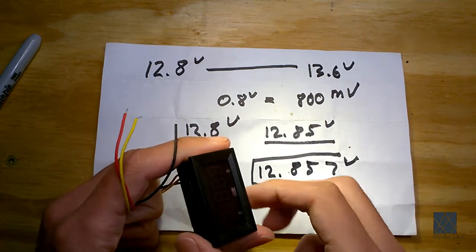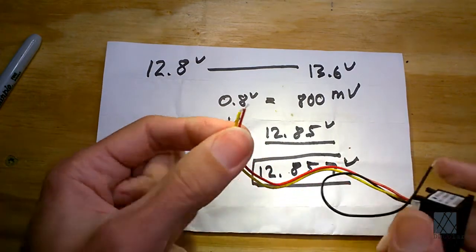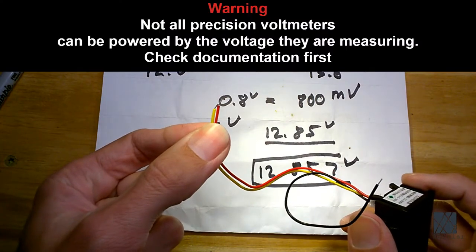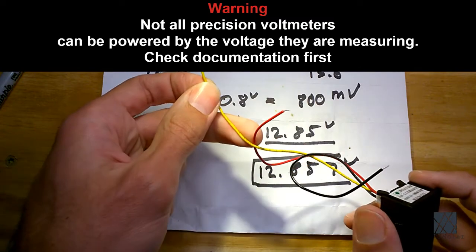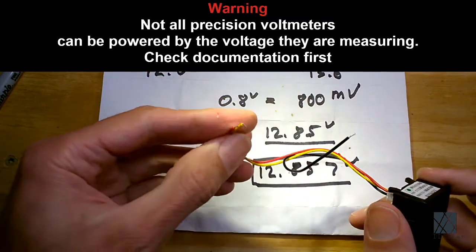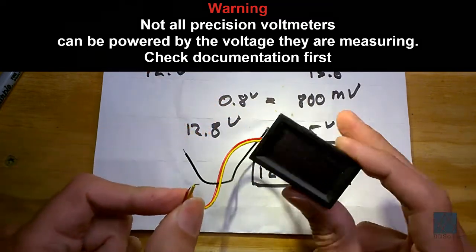I like this particular voltmeter because you have the option of bonding the red and yellow wire. That means you don't need a separate power supply. So I have the option of using a separate dedicated power supply or just using the battery itself to power this voltmeter.